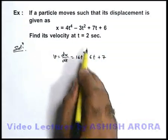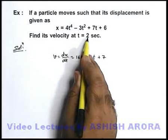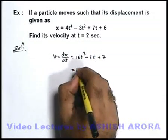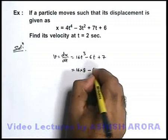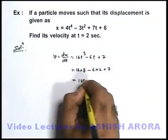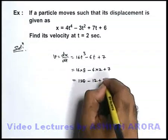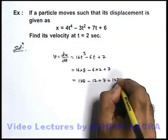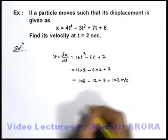And we are required to find velocity at 2 seconds. We can directly put the value of t at 2. This will be 16 × 8 - 6 × 2 + 7, so this will be 128 - 12 + 7, that is equal to 123 meters per second.